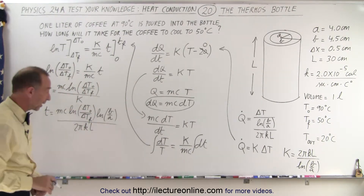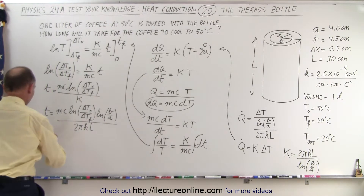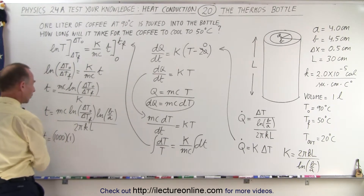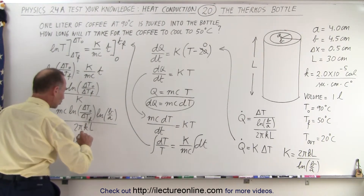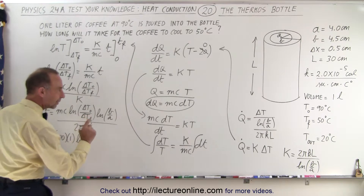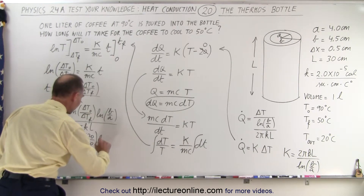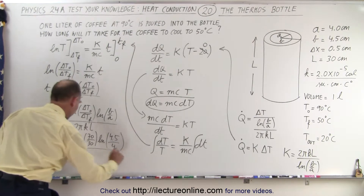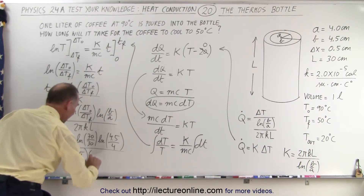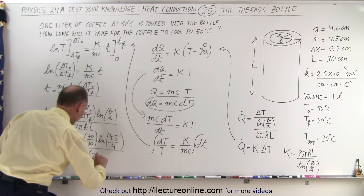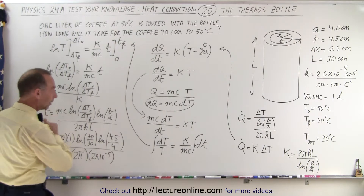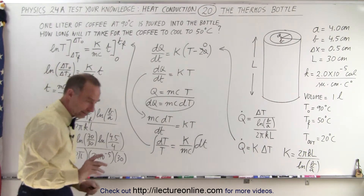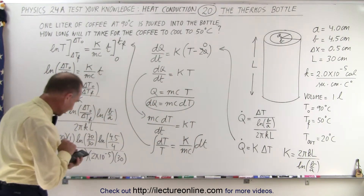Now we're ready to plug in the numbers. The total time in seconds equals: mass = 1000 grams per liter; c = 1 calorie per gram per centigrade degree; times ln(70/30) — the initial over final temperature difference; times ln(4.5/4) — the outside radius over inside radius; all divided by 2π times k, which is 2×10⁻⁵ calories per second per centimeter per degree, times L = 30 centimeters. Everything is in centimeters, centigrade degrees, and calories.